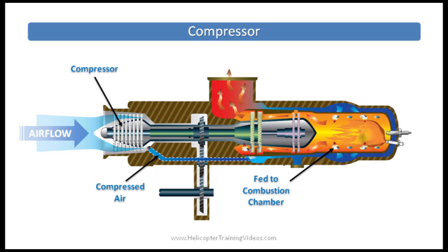Let's look at the compressors to start with. The compressor draws filtered air in, slows it down, and compresses it using blades and stator vanes. There may be more than one row of these, and they're called pressure stages. About 75% of the airflow is actually used to cool the engine. The air is drawn in at the front, compressed, and then the compressed air is fed back towards the combustion chamber.